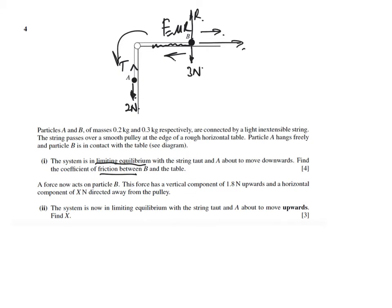In this case, imagine it's about to move downward. So 2 newtons minus T equals to ma. Since there's no motion involved, 2 newtons equals to T, or T equals to 2 newtons.